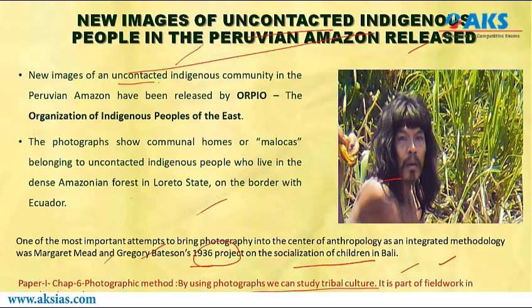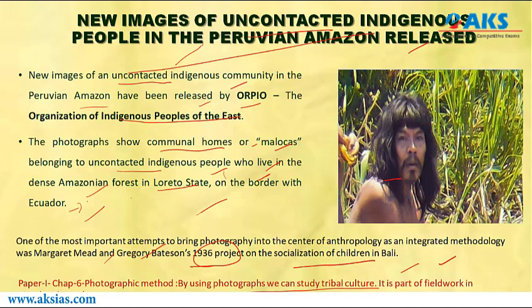The news article conveys that new images of the uncontacted indigenous community in the Peruvian Amazon have been released by ORPIO — the Organization of Indigenous Peoples of the East. Amazon is a cradle of many uncontacted tribes. The photographs show communal homes or maloc cars belonging to uncontacted indigenous people in the dense Amazonian forest in the Loreto Strait on the border with Ecuador.